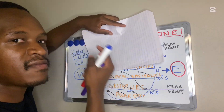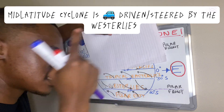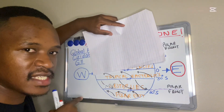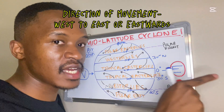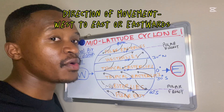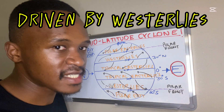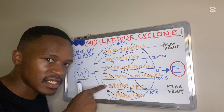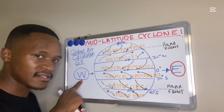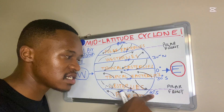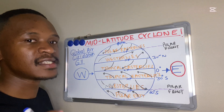Westerlies are named because they come from the west. This means our mid-latitude cyclone is driven or steered by the westerlies. The direction of movement for mid-latitude cyclones is from west to east, or eastwards, because they are driven by the westerlies between 30 and 60 degrees.